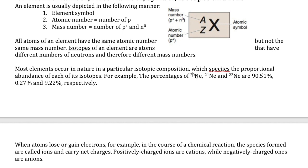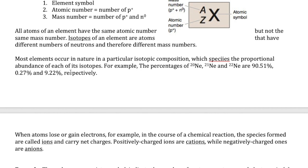Why not the protons? Because they're all neons. The atomic number is the number of protons, and that tells you what the element is — so they all have the same atomic number and the same number of protons. The percentage given here is called the percent abundance, which is how much of a specific isotope is found on Earth. For neon, the most abundant isotope is isotope 20 at about 90.5%, and the rarest is isotope 21 at only about 0.3%.